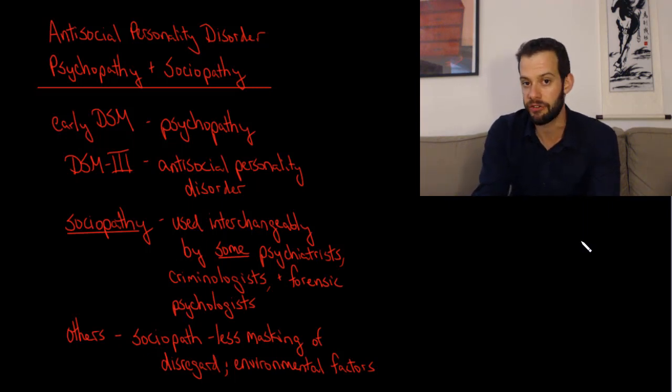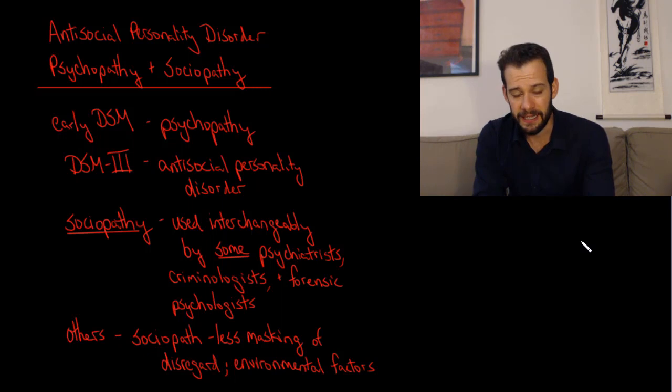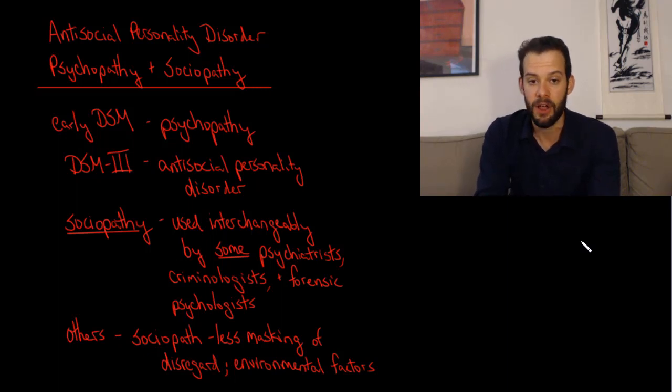So in those who try to differentiate these terms, they may use the term sociopath to refer to someone who shows less masking of their disregard, meaning that if somebody is violating the rights of others and not feeling any empathy or remorse, some people might try to hide this and others may not. The idea is a sociopath is somebody who's not trying to hide this. They're sort of blatantly disregarding the societal expectations that they should pretend to feel remorse or something. Whereas a psychopath might be seen as more manipulative and deceitful and more willing to pretend to be having certain sentiments or certain feelings when in fact they actually aren't. And so that's one way that some people try to differentiate these terms.